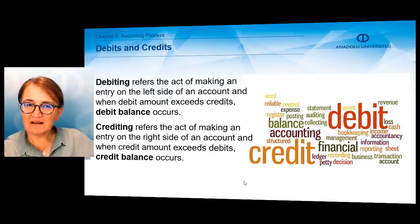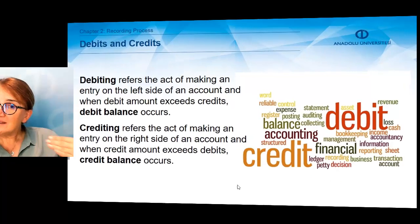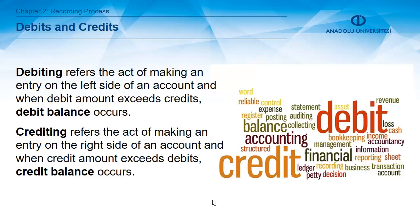The left side of the account is called the debit side. Entering data to the debit side of the account is called debiting the account. If you are writing any amount to the credit side of the account, we call it crediting the account. The debit side and credit side of the account include data or amounts. If the total debited amount is higher than the total credited amount, the account will have a debit balance. If the opposite is true — if the total credited amount is higher — we say that account has a credit balance.